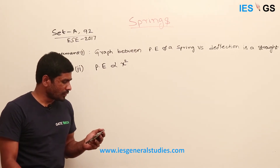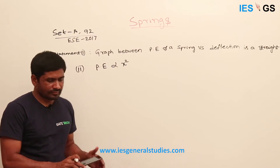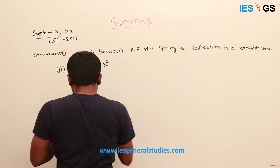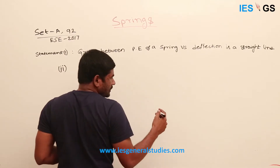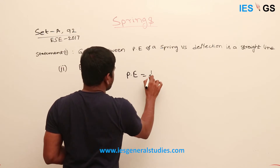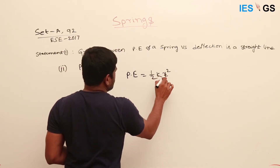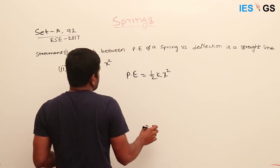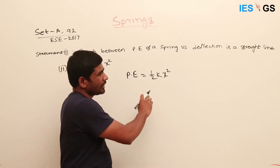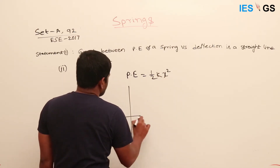The potential energy of a spring is given by PE = ½kx². We want to draw the graph between PE and X. What does this graph look like?